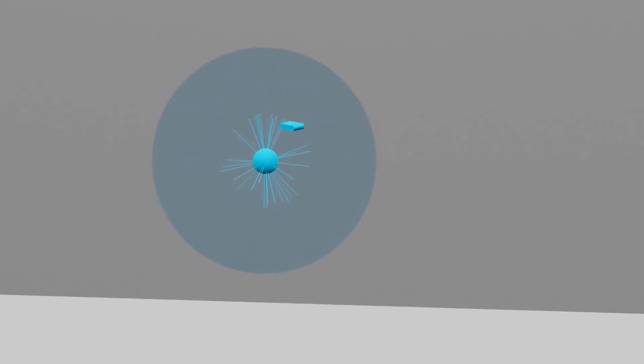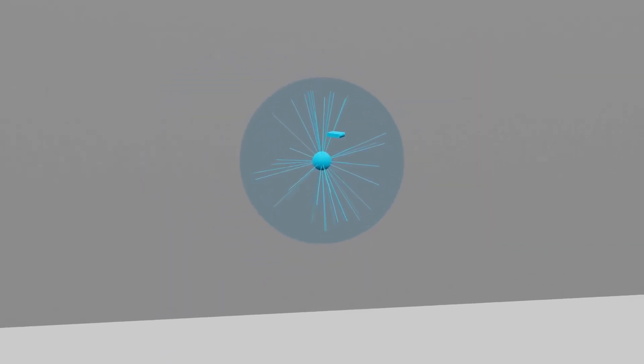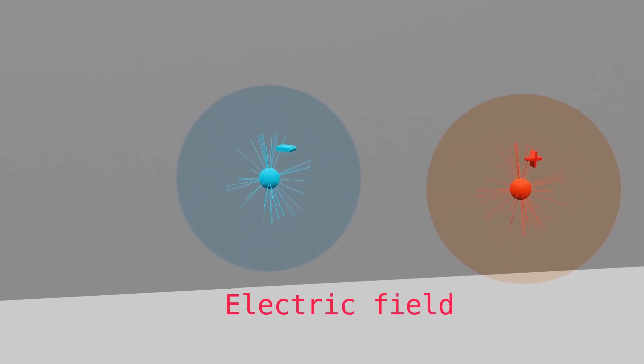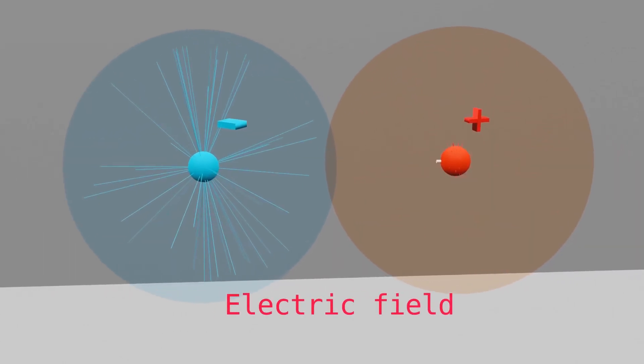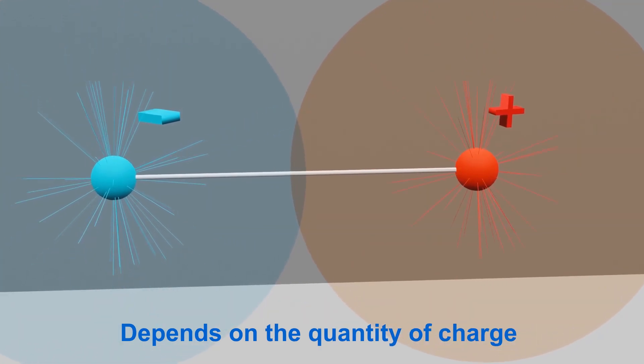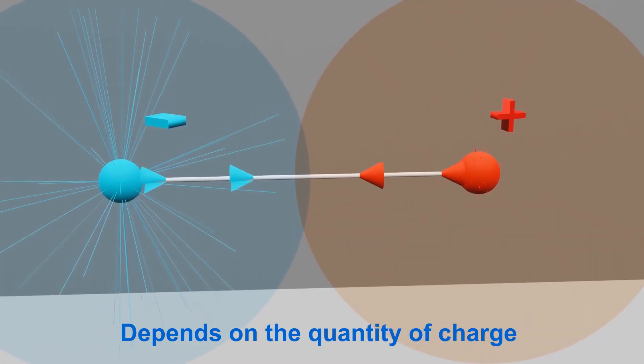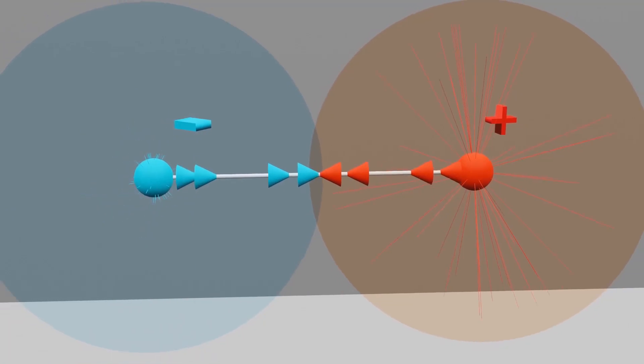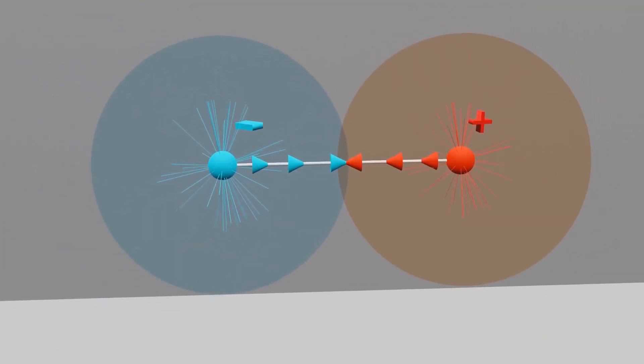The electric field lines of negative charges are inwards. If a negative charge approaches a positive charge, both charges exert a force on each other. The strength of the electric field depends on the quantity of charge, and the force between charges can be either repulsive or attractive, depending on the nature of the charges involved.